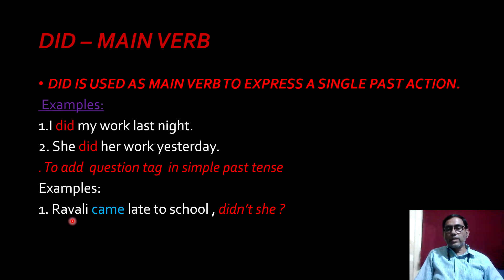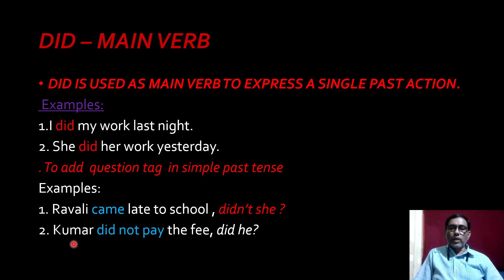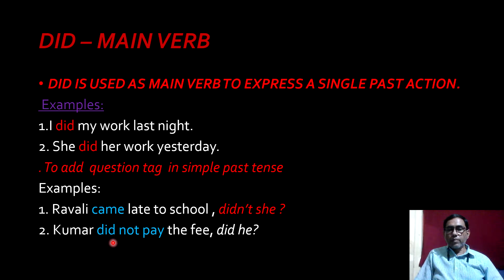Another example: Kumar did not play the field. In this sentence, did is used as helping verb. Play is the main verb. This is a negative statement. So in the tag, I use 'did he.' Kumar is third person singular, male gender, so I use the pronoun 'he.'